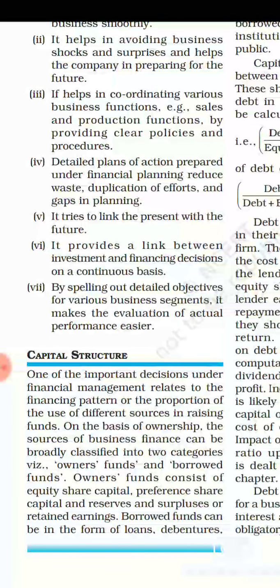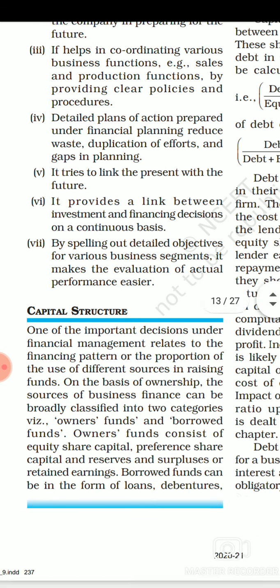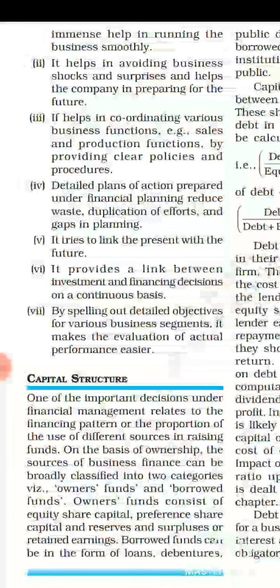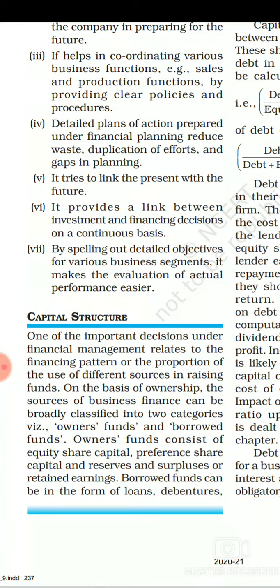Another advantage is that financial planning helps in coordinating various business functions — such as sales and production — by providing clear policies and procedures. In financial planning, all plans are made in advance about future operations, which helps coordinate different functions of the business. Policies are clearly defined beforehand for how production work will go, how selling work will proceed, helping to coordinate everything in the business.